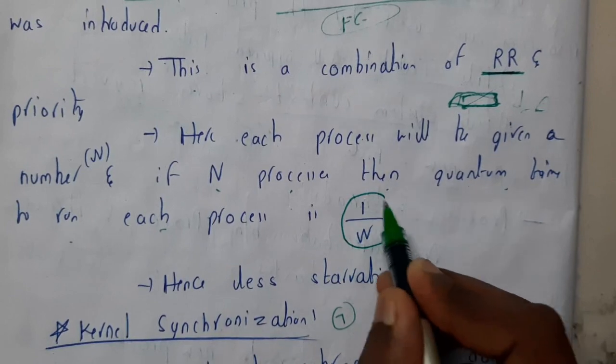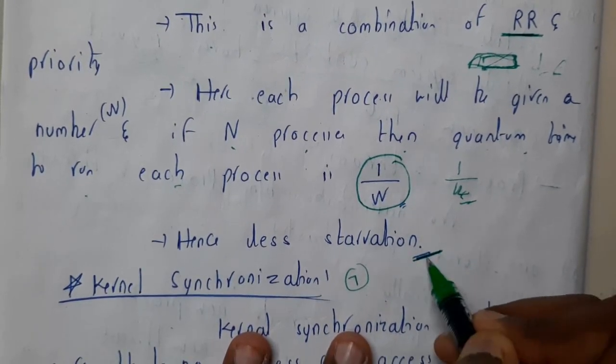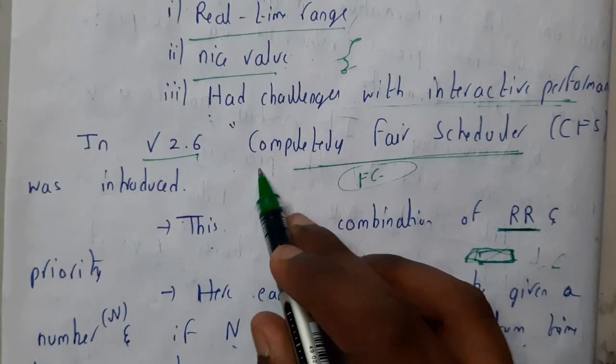Here the quantum time will be 1 by N. So if we assume 14, it will be 1 by 14. Here there is a chance of lesser starvation when we compare with other schedulers. So this is the name of the scheduler, completely fair scheduler.